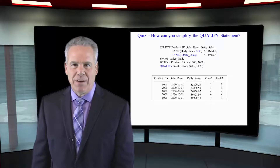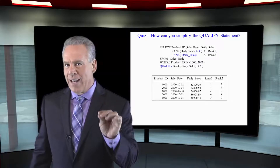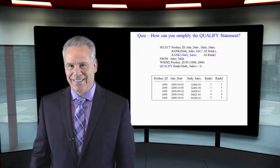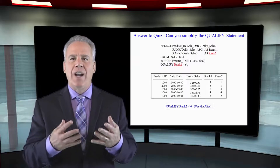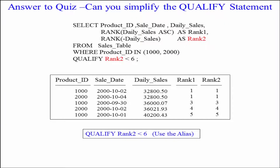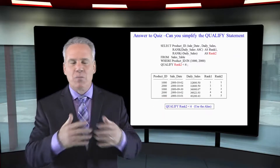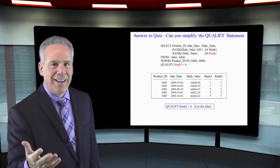Take a look at this qualify statement — I'm saying qualify rank minus daily sales less than six. How could I simplify that? In the top part of the SQL, we have that same statement where we're ranking the daily sales and we give it an alias. It would be so much nicer to use that same alias down in the qualify clause. One of the beautiful things about Teradata is that once you define an alias for any column, you can use it again in your SQL. We've got rank two defined in the top, so we can say qualify rank two less than six — much simpler. It runs the same with no performance difference, but it's so much easier to write, code, and understand.